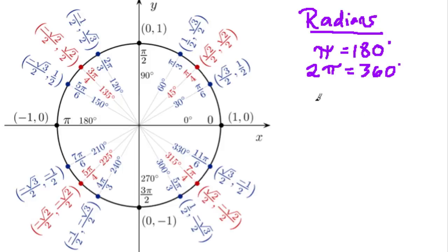If you see pi over 4, well, what's that? That's 180 divided by 4, or 45 degrees.